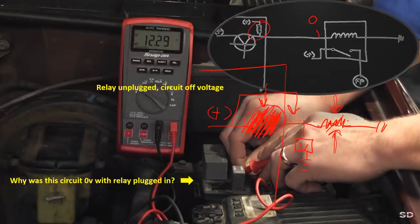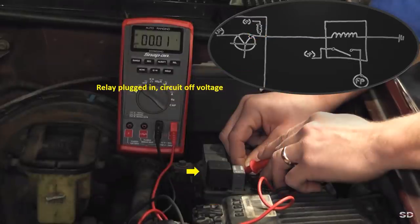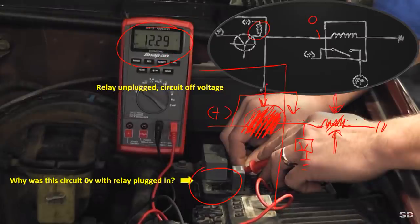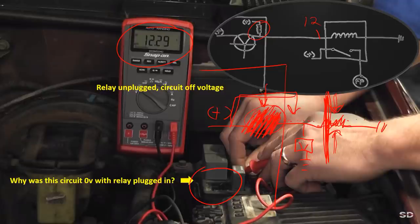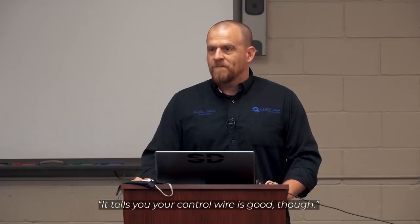What happens when I take that relay out? The relay is removed. The reading that was zero is now 12. Why? Because you've taken the ground path away. There's still voltage that comes through, but there's no current flow - it trickles through and fills that leg up with pressure equal to the source. This is electricity 101. And yes, that's exactly where we're going with this.